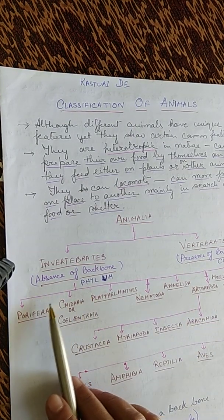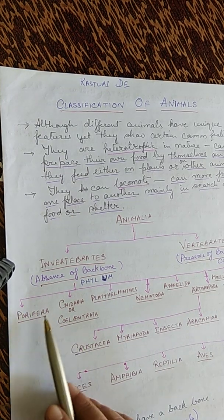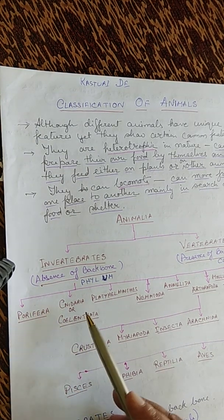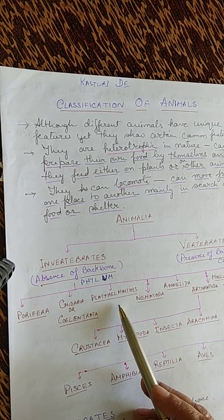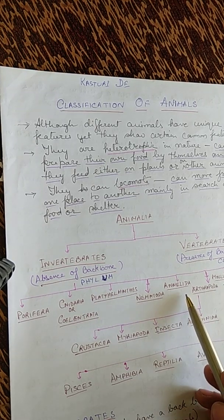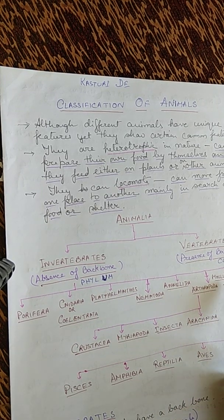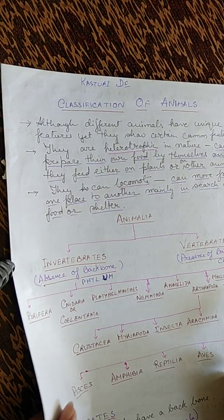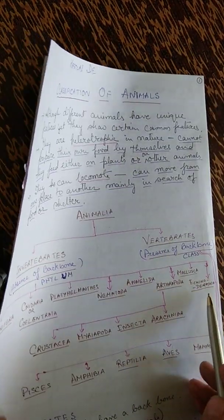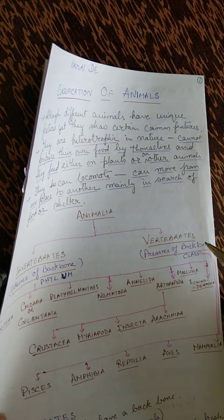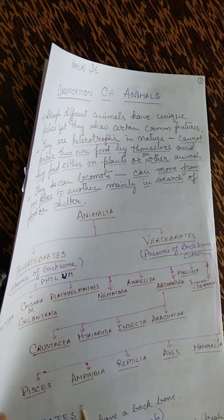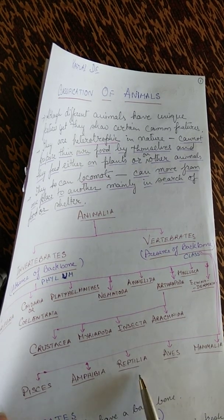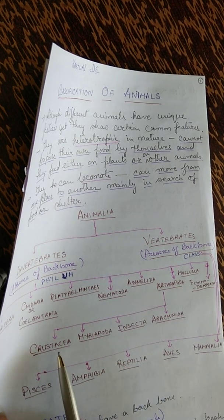Invertebrates are divided into different phyla: first Porifera, second Cnidaria or Coelenterata, third Platyhelminthes, fourth Nematoda, fifth Annelida, sixth Arthropoda, seventh Mollusca, and eighth Echinodermata. Vertebrates are divided into five classes: Pisces, Amphibia, Reptilia, Aves, and Mammalia. Arthropoda is further divided into Crustacea, Myriapoda, Insecta, and Arachnida.